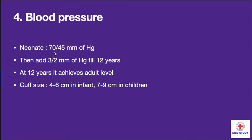Now going to blood pressure. Blood pressure of neonate is about 70 by 45 mmHg, then we add 3 by 2 mmHg till 12 years of age, at which point it achieves adult level. The cuff size is 4 to 6 centimeters in infants and 7 to 9 centimeters in children.